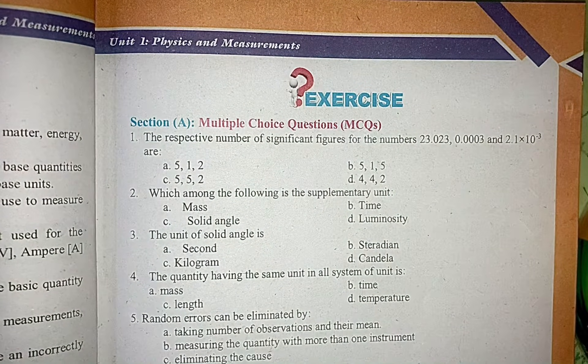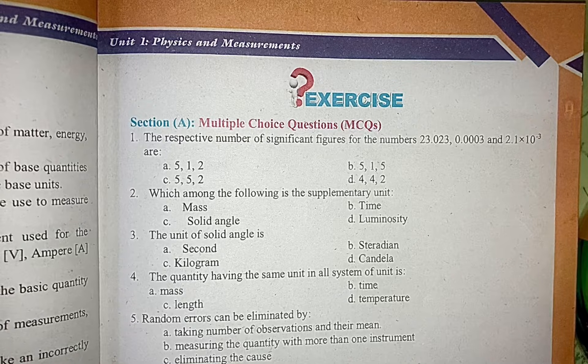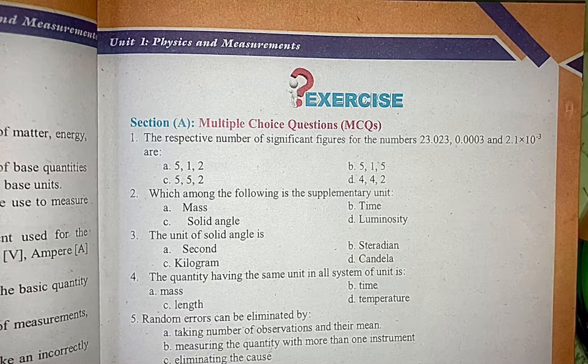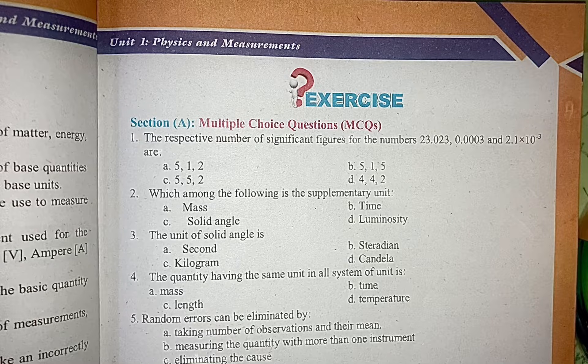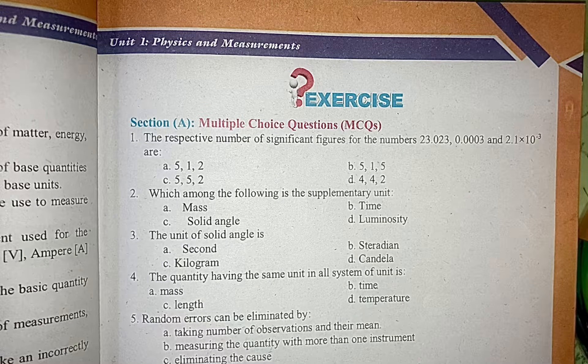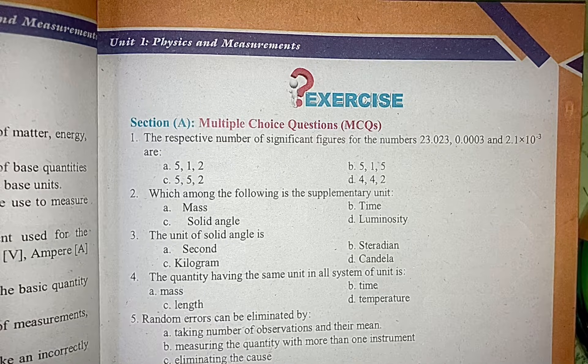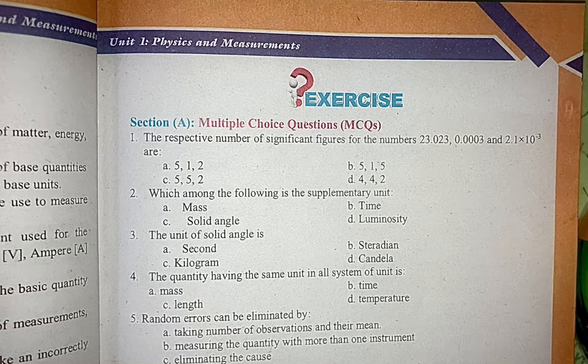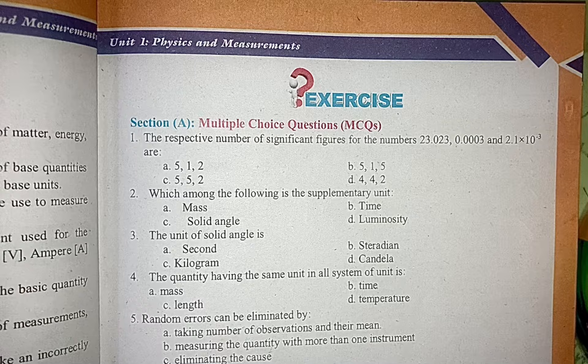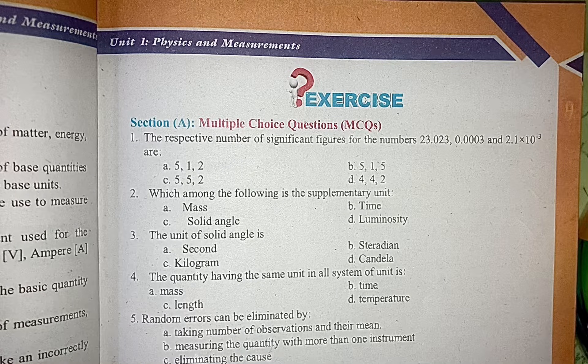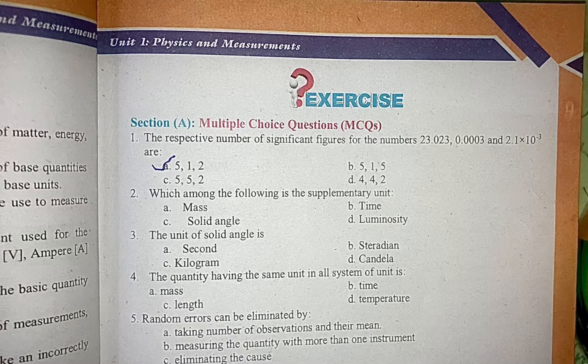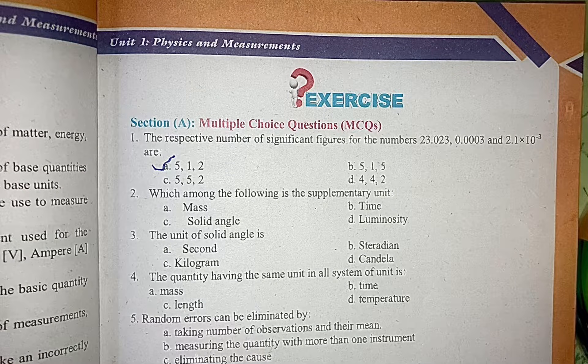MCQ solve chapter number one. MCQ number one: the respective number of significant figures for the numbers 23.023, 0.003, and 2.1 exponential power 3 are option number a: 5, 1, 2. Now there is MCQ number 2: which among the following is the supplementary unit?